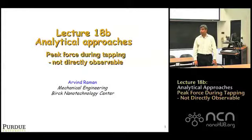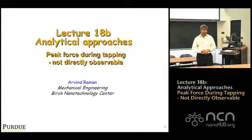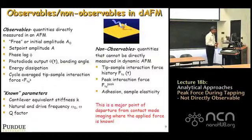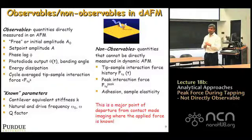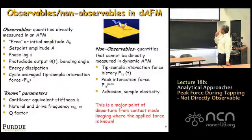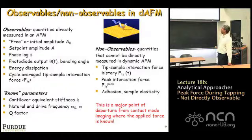The peak interaction forces depend on the local properties of the surface — the average force doesn't, but the peak force value should. On a harder sample you should expect higher forces; on a softer sample, softer forces. In AFM, what you observe is the initial amplitude in millivolts or nanometers, the set point amplitude, the phase lag as you scan, the energy dissipation using phase lag, the virial, and the average tip-sample force. These are all things you can get numbers for simply based on phase and average forces.